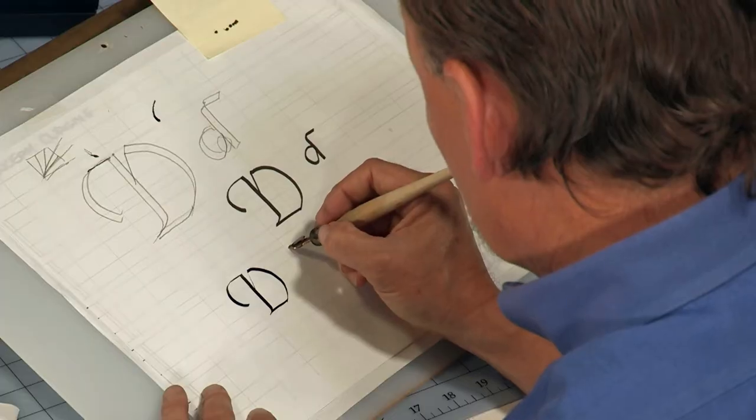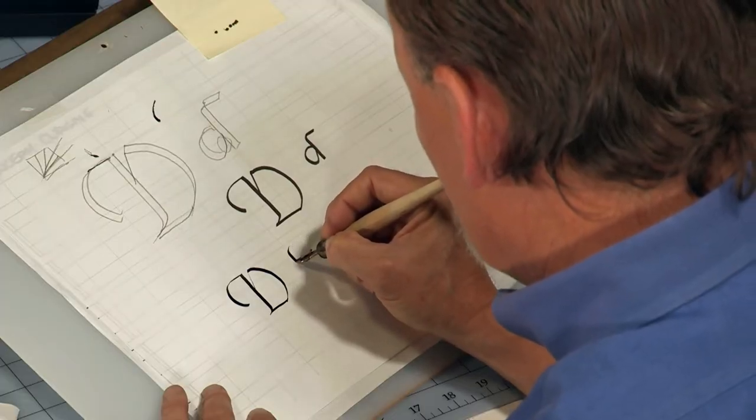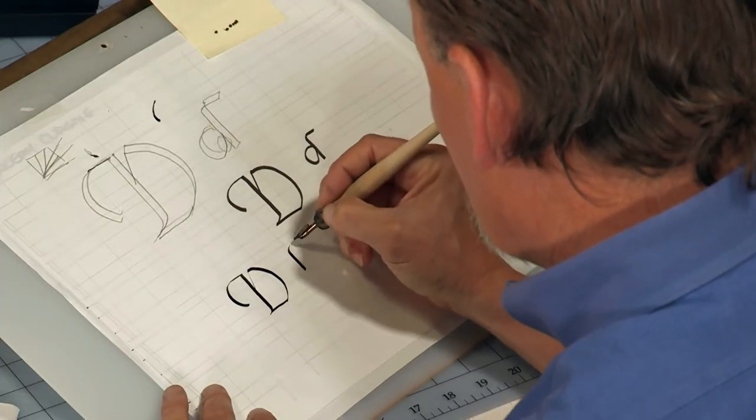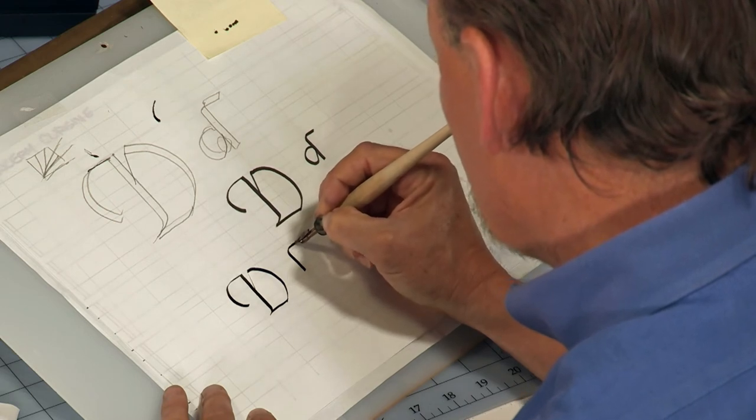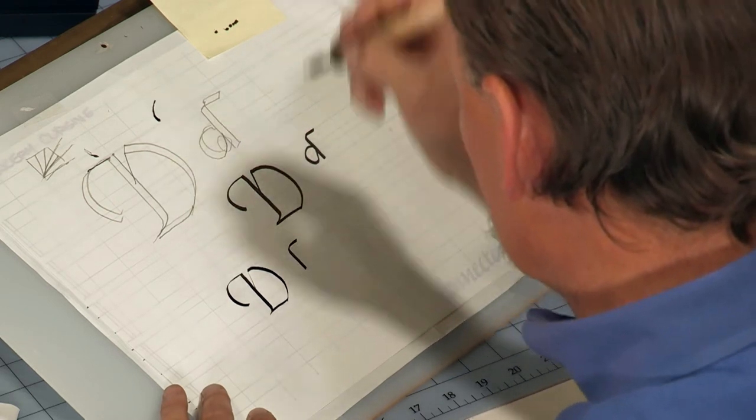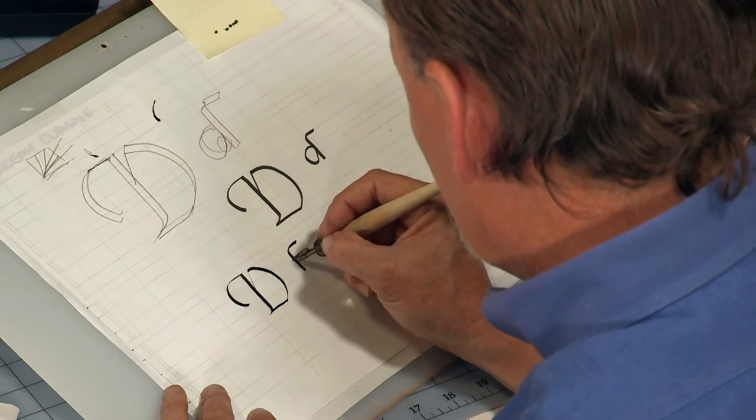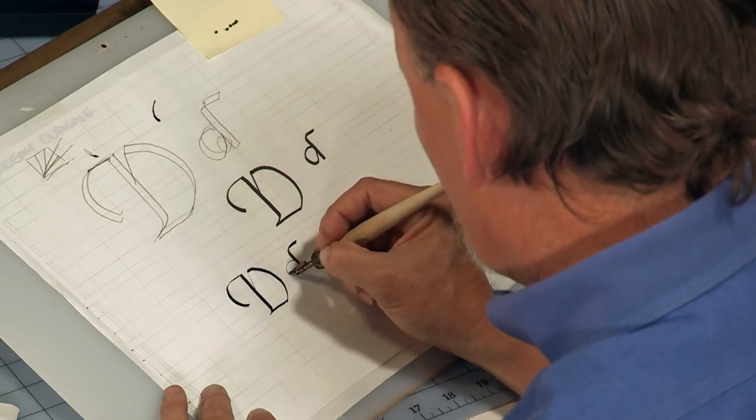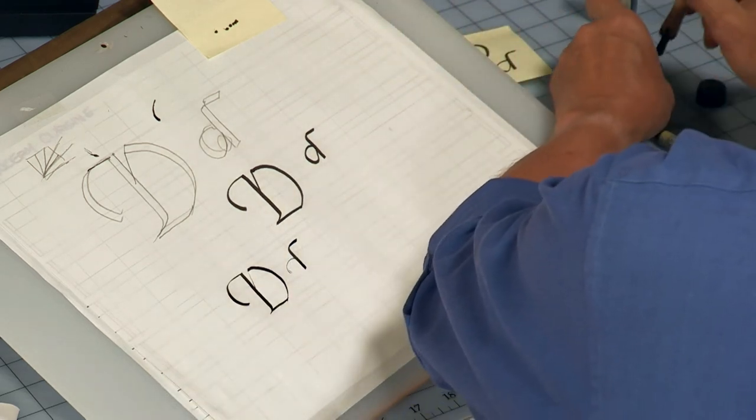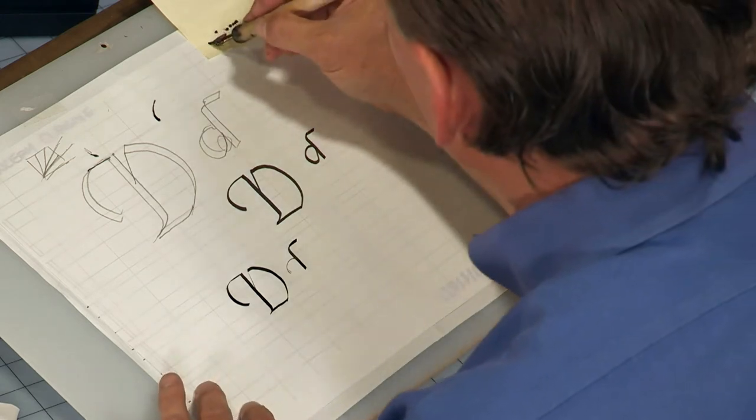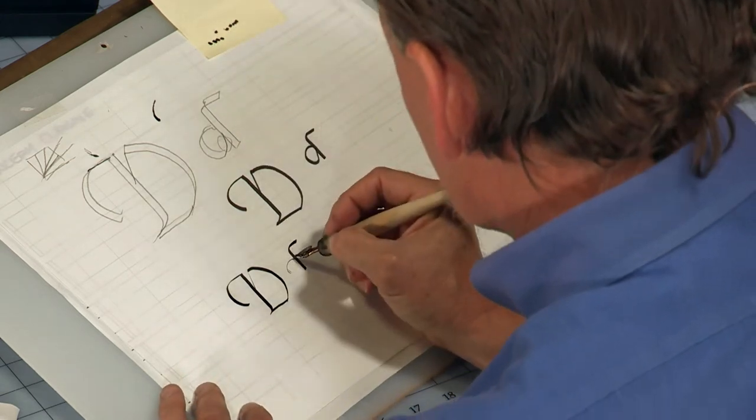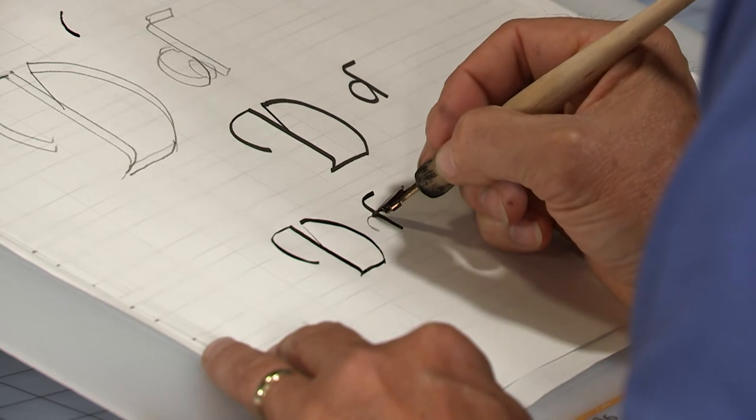Lowercase d, the stem first of all, straight to the baseline. Come back up here and do that flag. Do it twice if you need to with a dip pen and then the arc, the curve. And there I've run out of ink so I'm going to have to get some more, make sure my pen is behaving and start that loop again.